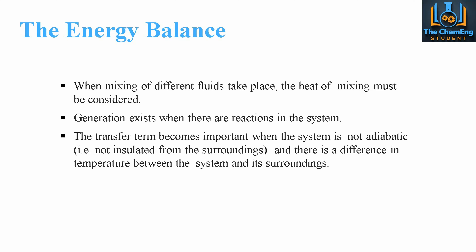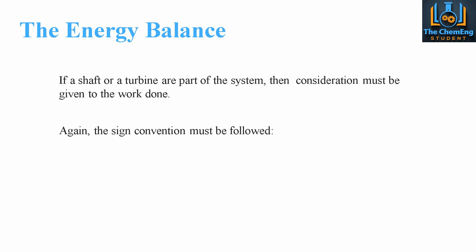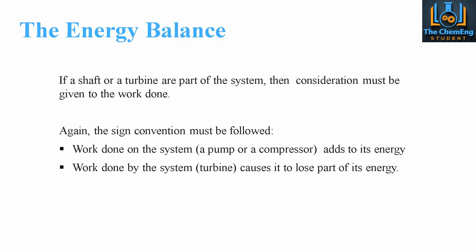The transfer term becomes important when the system is not adiabatic. Adiabatic means that it's not insulated from the surroundings, so heat transfer can take place from the system to the surroundings and vice versa. If there is a significant temperature difference between the system and the surroundings, we couldn't assume adiabatic conditions. If the difference was very subtle — maybe plus or minus 5 degrees Celsius — we could assume adiabatic, but if the temperature gradient is too vast, we couldn't, unless we were to insulate the system.